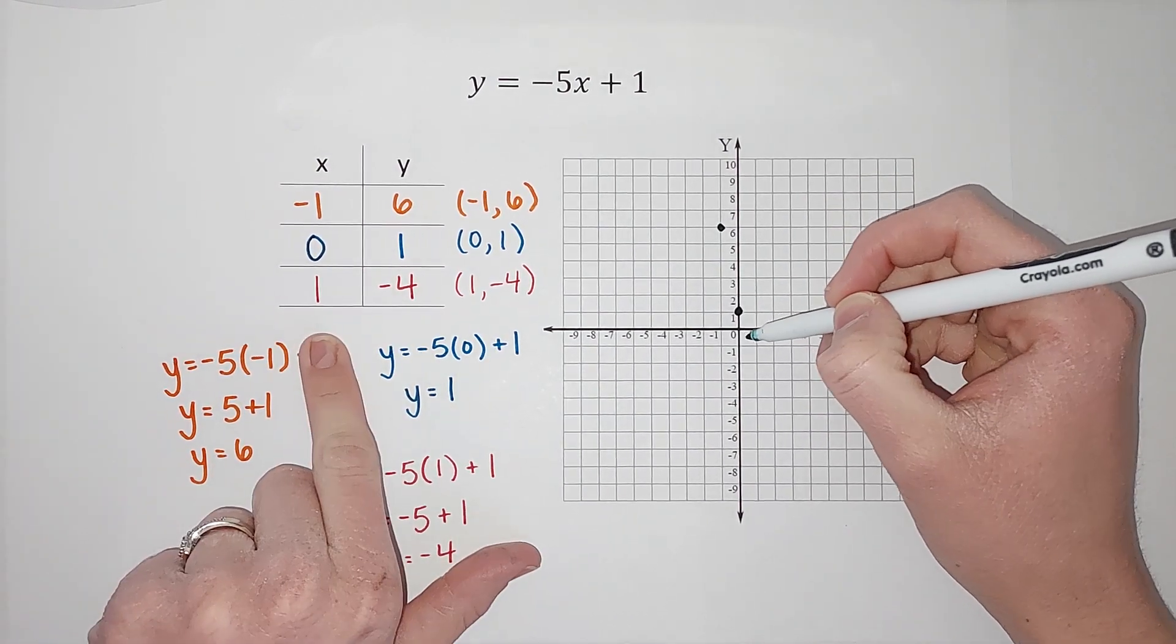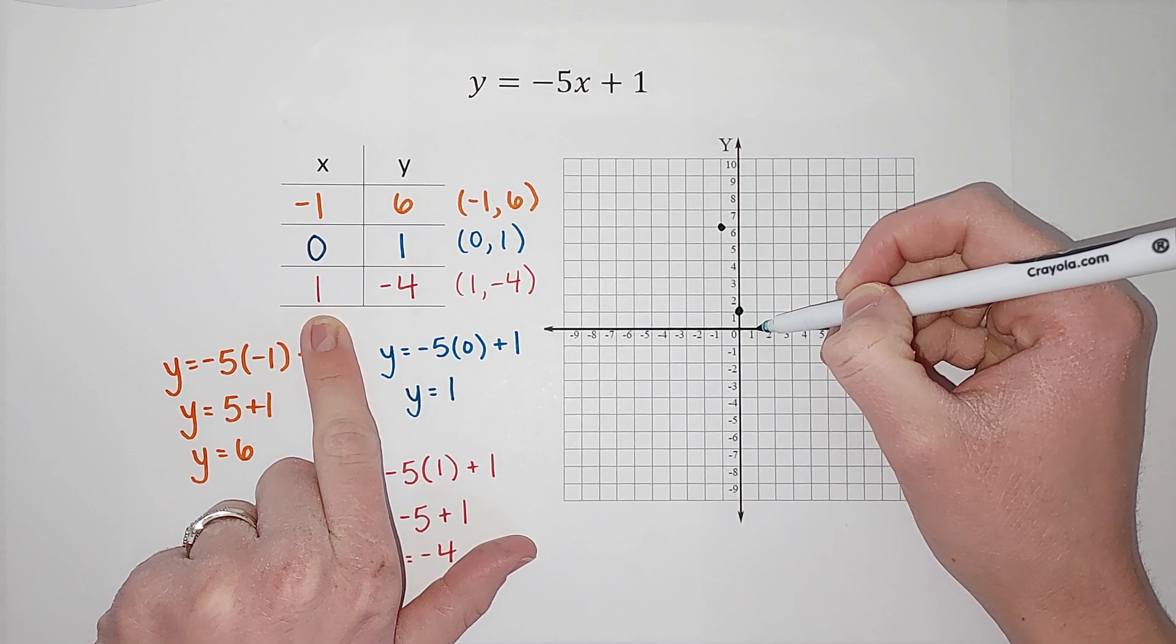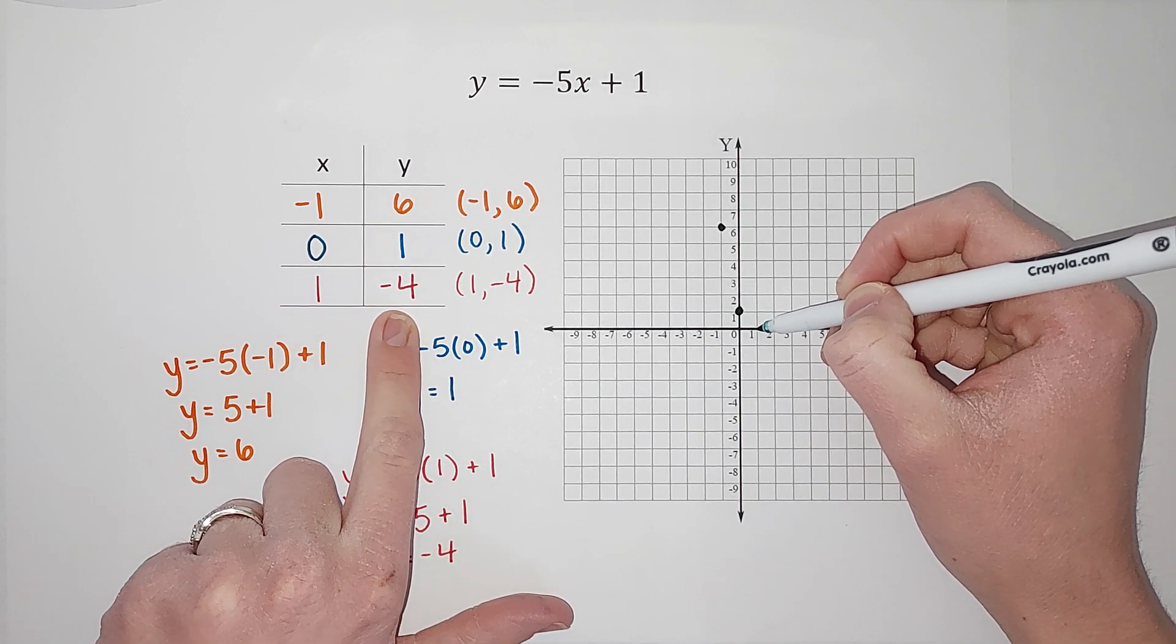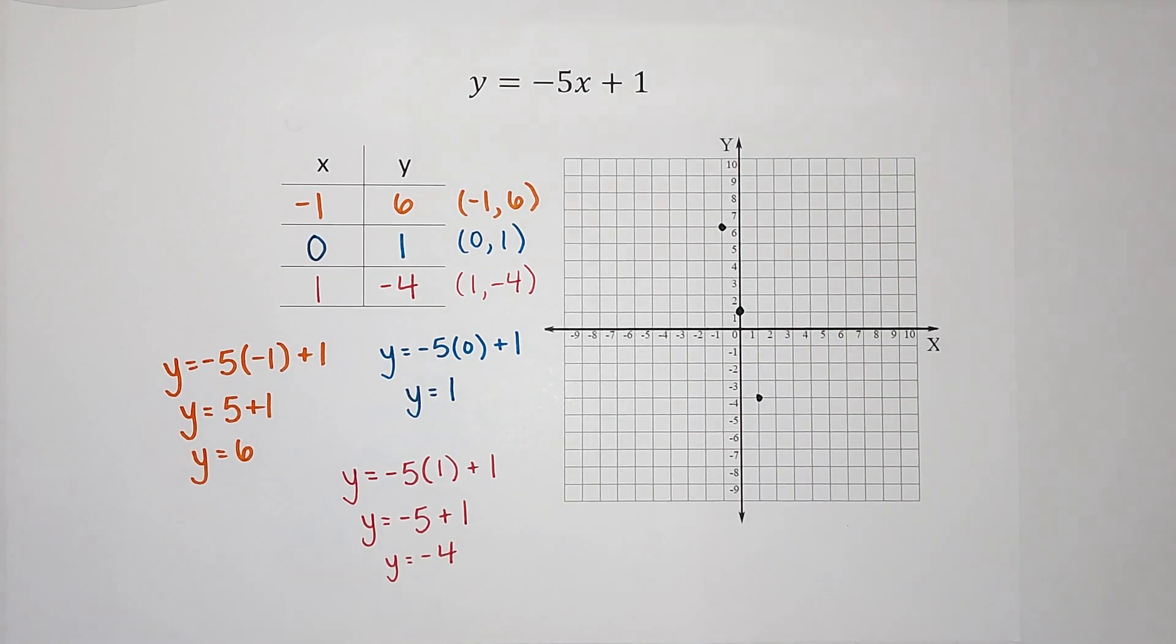Also my last one, we start at zero, zero. X is one, so I go over one to the right. Y is negative four, so I'm going to go down four: one, two, three, four.